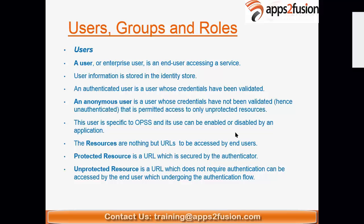An authenticated user is a user whose credentials have been validated. An anonymous user is a user who has not been validated — you can also call them unauthenticated — meaning they are permitted access to only unprotected resources. Resources are nothing but URLs.